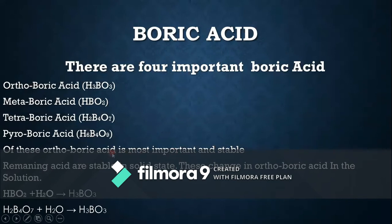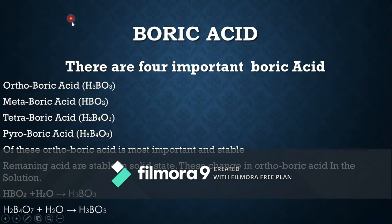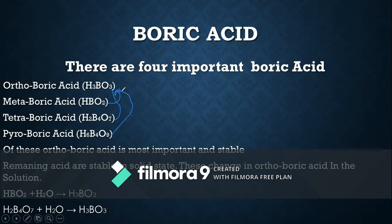Orthoboric acid is the more stable acid. All other acids — metaboric, tetraboric, and pyroboric — are stable in solid form, but in solution form these acids are converted into orthoboric acid. Orthoboric acid is slightly stable in solution form, and it is a monobasic Lewis acid.